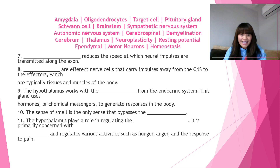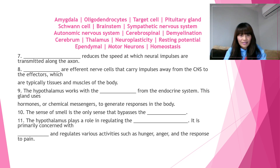Number ten: the sense of smell is the only sense that bypasses the blank. The answer for number ten is the thalamus — the sense of smell is the only sense that bypasses the thalamus.